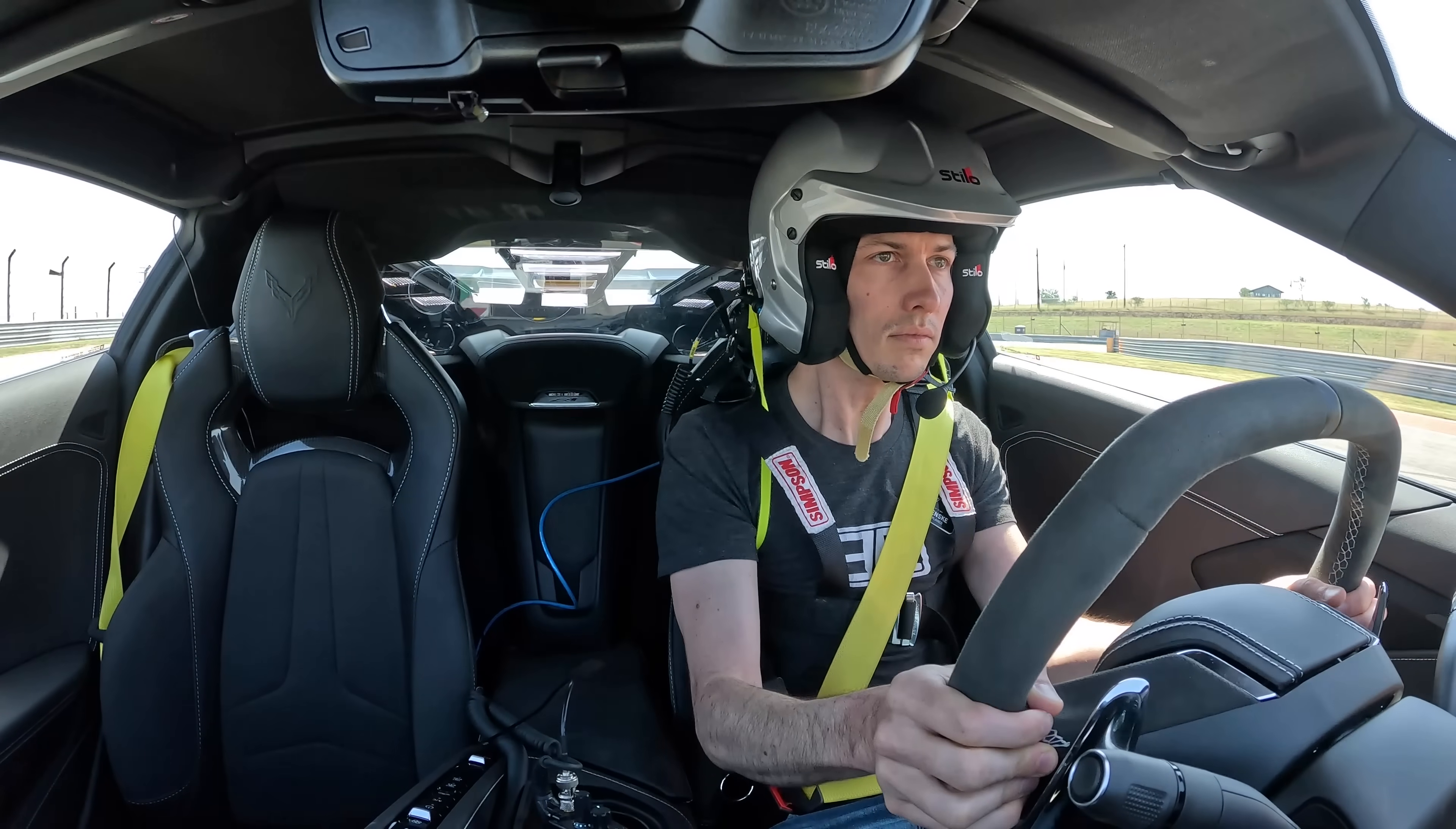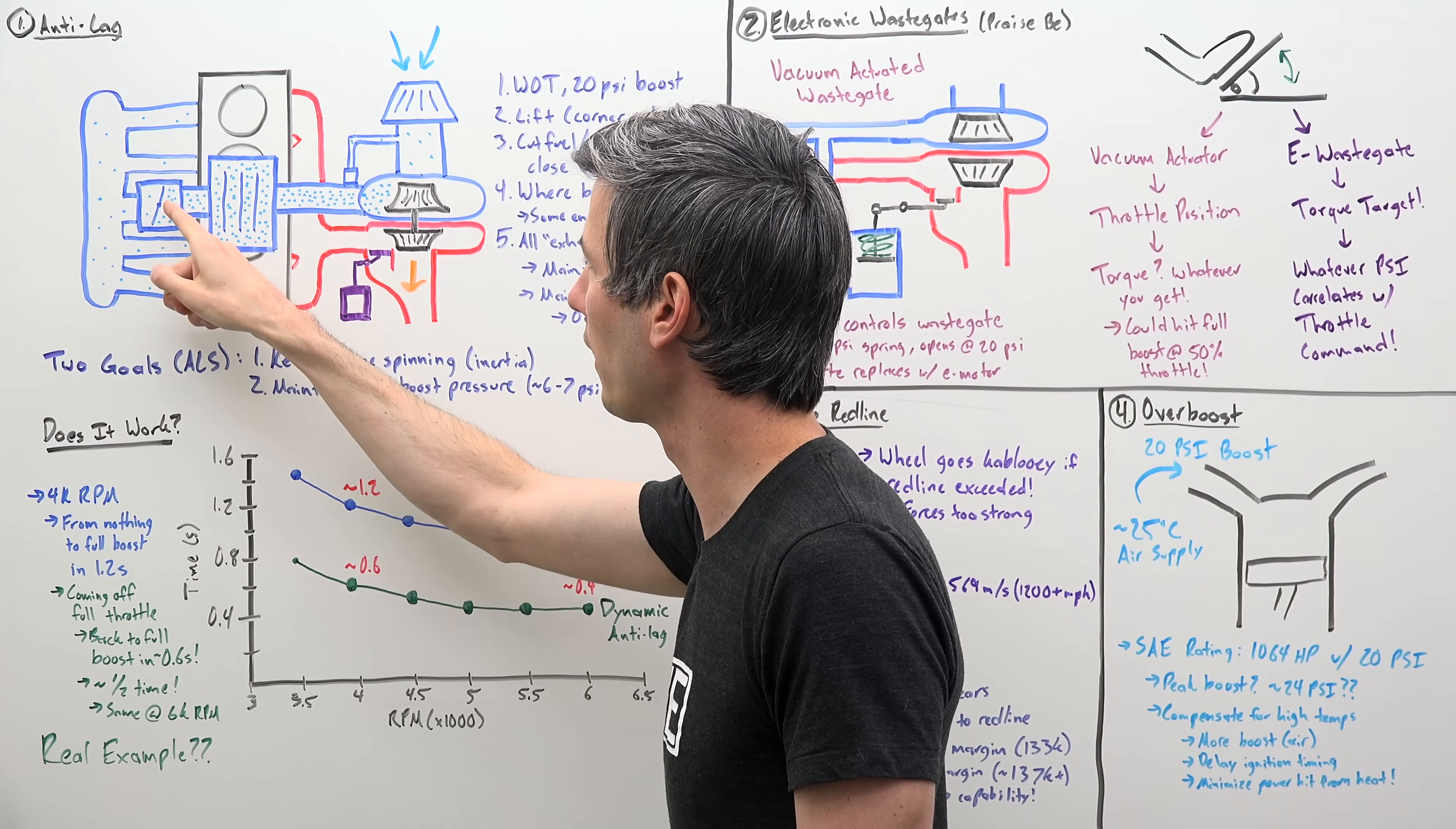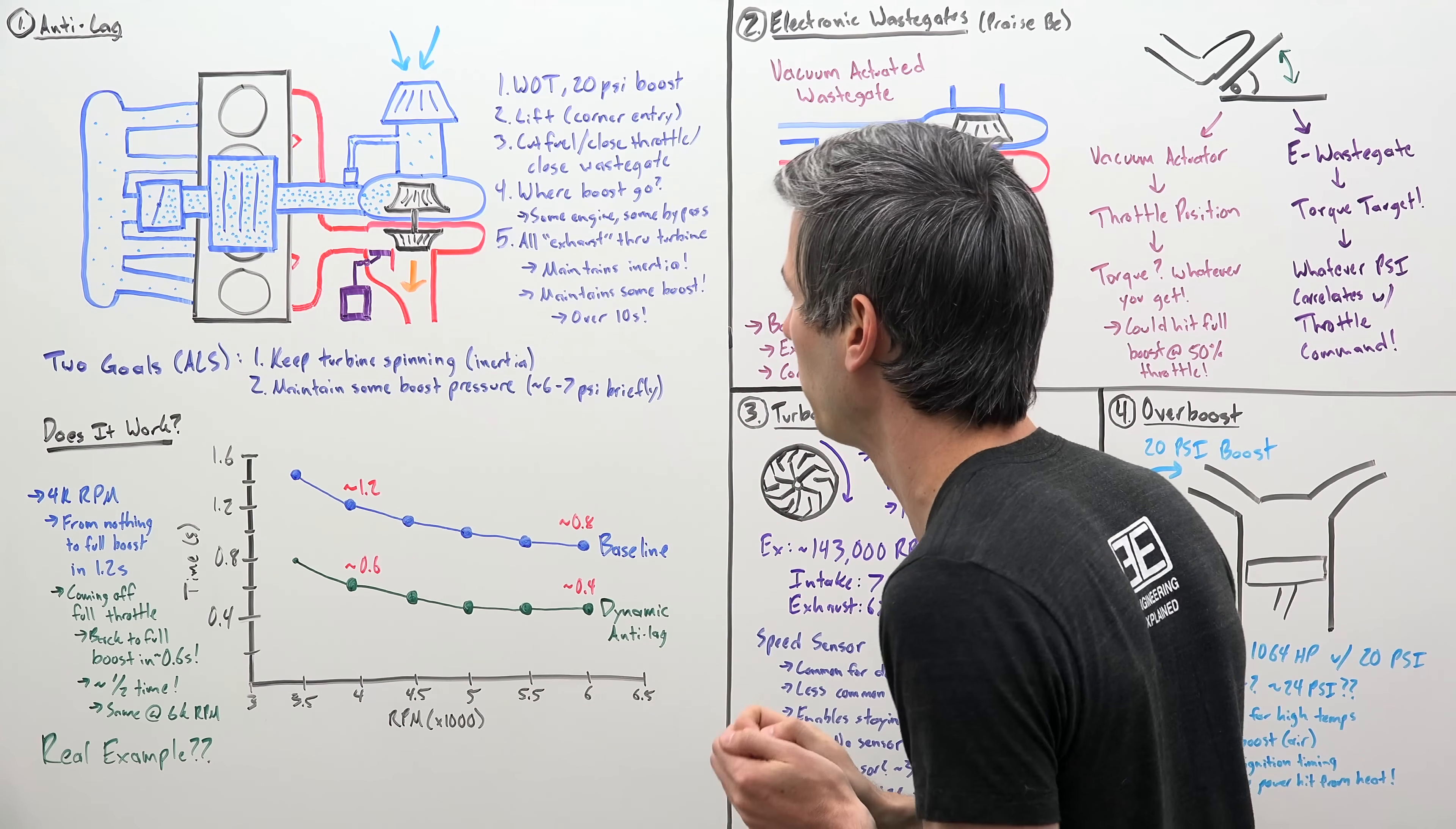So let's run through an example of how this anti-lag system works. We're already flooring it, going down a straight, making peak boost 20 psi. Our air is coming in the air filter, passing through the compressor side of our turbocharger where it builds up to 20 psi. This throttle valve is open, passing through the intercooler, then through the throttle valve, through the intake manifold into our engine, out the exhaust, and then out that turbine. The wastegate in this scenario is open because we're already at peak boost, so we're bleeding off any excess exhaust through that wastegate, keeping this turbocharger spooled up.